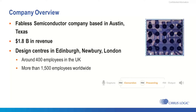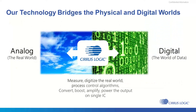Cirrus Logic is a fabulous semiconductor company, headquartered in the US, but there are three design centers in the UK — in London, in a location very close to here, and one in Edinburgh, which is where my team is based. What Cirrus does is make a lot of chips that act as an interface — we do analog to digital conversion, and one of the key applications is audio processing.